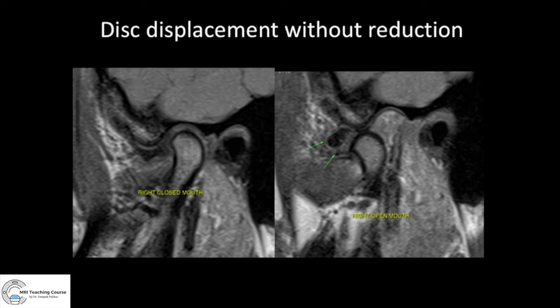Another example: this is the disc, and you can see it looks degenerated — it doesn't appear as dark as we saw earlier, but the shape still identifies it as the disc, and there is nothing in the normal disc position. This disc is displaced anteriorly, and on open mouth, the mandibular condyle moves anteriorly but the disc remains anterior and the patient is not able to fully open the mouth. This is disc displacement without reduction.